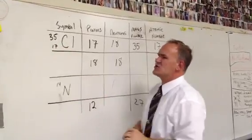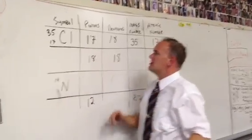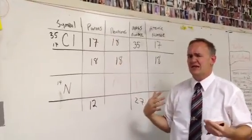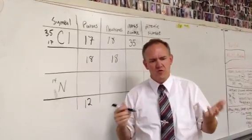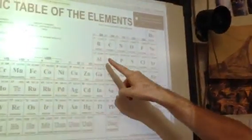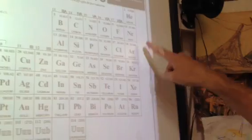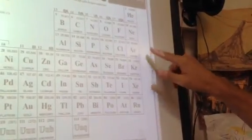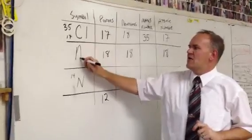Now we go down to the next row. This row doesn't give us a symbol, so we're going to have to do some research. We look at the number of protons and see that it's 18. We look at the periodic table for element number 18 — that turns out to be argon. So we know we're dealing with argon. That 39.9 is the atomic mass; we're going to ignore that, we don't need it for today's assignment. We're going to use argon, symbol Ar.